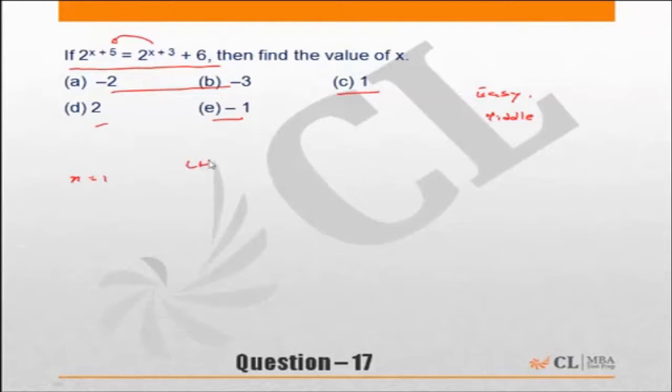If I put x equal to 1, let's see what we get on the left hand side and right hand side. The left hand side becomes 2^6, which is nothing but 64. And the right hand side becomes 2^4 + 6. 2^4 is 16 plus 6, which is 22.